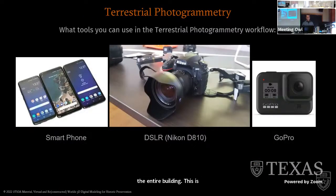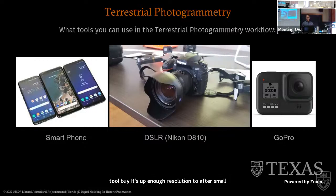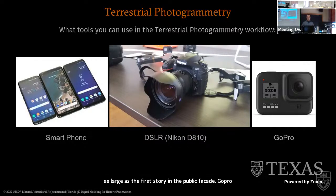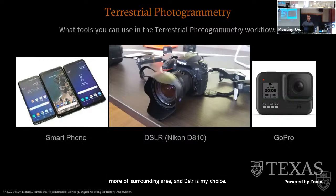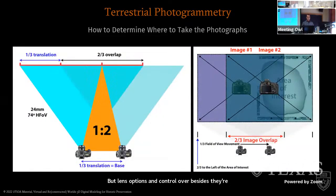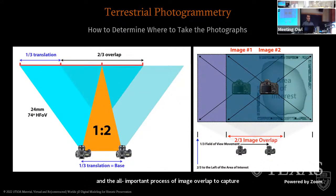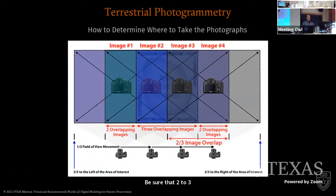For terrestrial photogrammetry, a smartphone at the most basic level provides enough resolution to capture small objects such as a fountain or planter, but can also capture something as large as the first story of a building. A GoPro with fisheye lens captures more of the surrounding area. A DSLR is the tool of choice for multiple lens options and control over focus, ISO, light, and color depth. The all-important process of image overlap requires two to three image overlap as a rule of thumb to ensure sufficient surface capture.